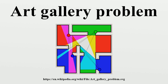Chvátal's art gallery theorem, named after Václav Chvátal, gives an upper bound on the minimal number of guards. It states that ⌊n/3⌋ guards are always sufficient and sometimes necessary to guard a simple polygon with n vertices. The question about how many guards were needed was posed to Chvátal by Victor Klee in 1973, and Chvátal proved it shortly thereafter.